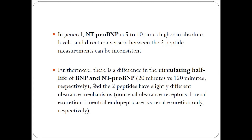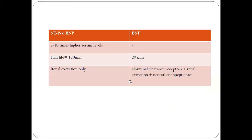BNP is cleared by three routes: non-renal clearance receptors, renal excretion, and neutral endopeptidase enzymes in the blood. However, NT-proBNP is cleared only by renal excretion — this is an important distinction to note.